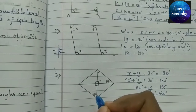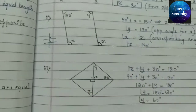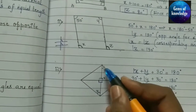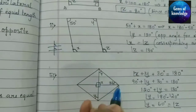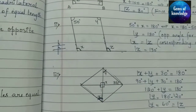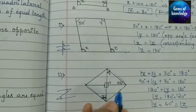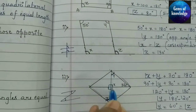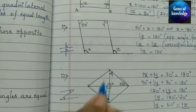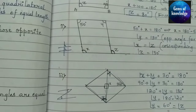For angle Z: it equals angle Y because these form alternate angles — a Z-shaped pattern where the inside angles are alternate angles and therefore equal. So angle X equals 90 degrees, angle Y equals 60 degrees, and angle Z equals 60 degrees.